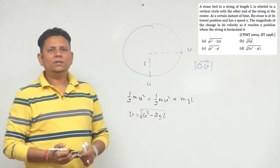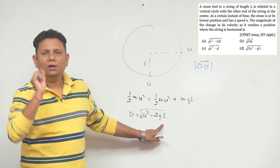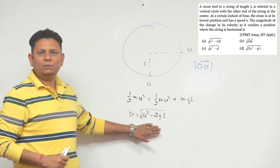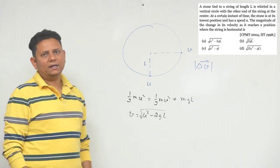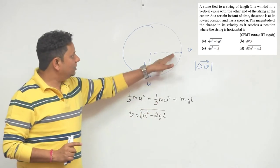Now here we notice that option number A is U squared minus 2gL. Many students are wrong with this. They get an expression in the options, they mark it and move on. But this value is the value of velocity. We have to find change in velocity.